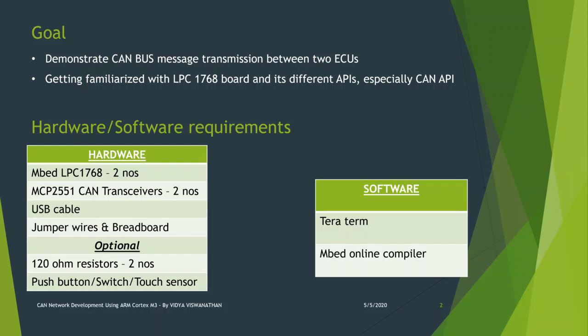The hardware and software requirements are listed here. We mainly need two ARM Cortex M3 based LPC 1768 boards, two MCP2551 CAN transceivers, a USB cable, jumper wires, and a breadboard. It is recommended to use a 120 ohm resistor between the CAN high and CAN low terminals, but since we are operating at a lower baud rate, it is not mandatory. The switch is also optional since we can use a jumper wire instead.